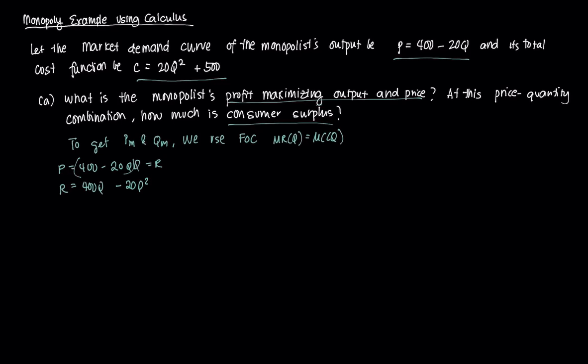To get marginal revenue, we take the first order derivative, so that's dR/dq, which gives us 400 - 40q using the simple power rule. Then we need marginal cost. Marginal cost MC(q) is just the derivative of our cost function with respect to q, so that's going to be 40q.